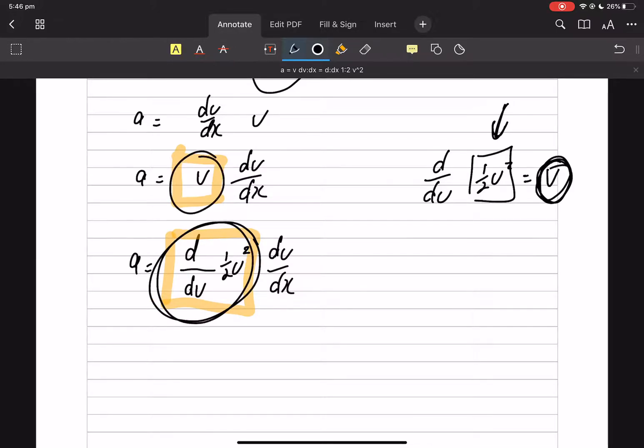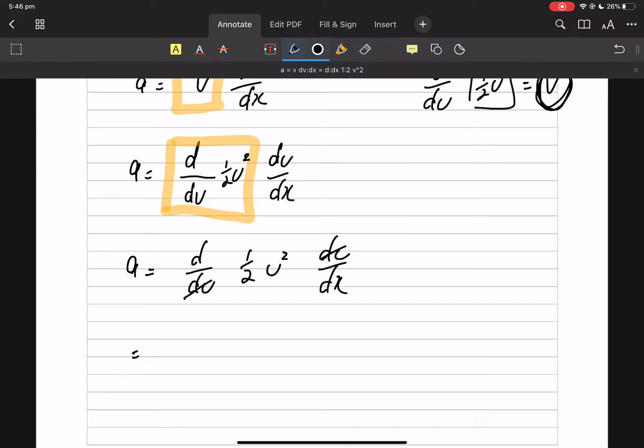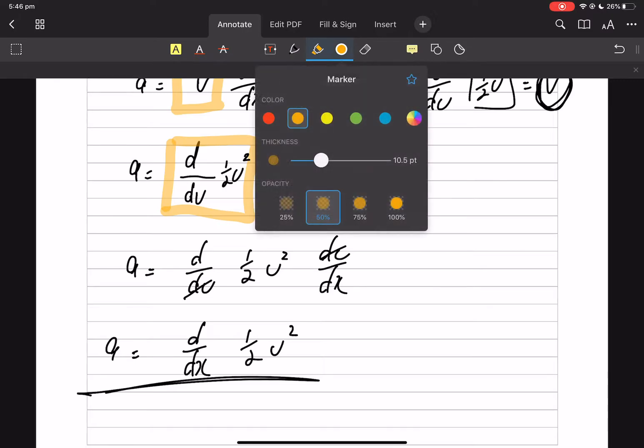So if I put a half v squared in that orange box, then inside that orange box is actually just v, the same as that one, so we haven't changed anything. So I can write acceleration equals d/dv of half v squared dv/dx. We did this because those dv's cancel. So you can see that I can just suck that dx into there and I'm left with a half v squared.